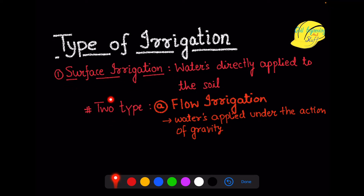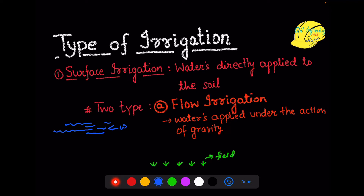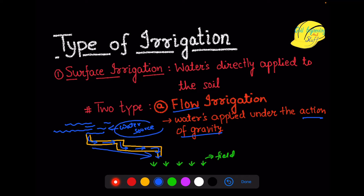Surface irrigation can be done in two ways. The first is flow irrigation, where water is allowed to reach the field by the mere action of gravity. Here, the water source is at a higher elevation with respect to the field. With the help of a well-built network, we can ensure the transfer of water to the desired destination. Since the source is at a higher elevation, the water flows under the action of gravity — that is called flow irrigation.